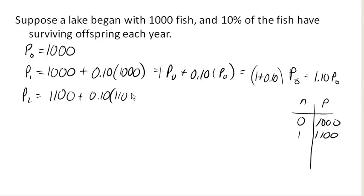In other words, this is P₁ plus 0.10 times P₁. And by extending the same logic we had here, that would be 1.10 times P₁. If I calculate that out, 10% of 1,100 is 110. Add that on, my population is now 1,210.